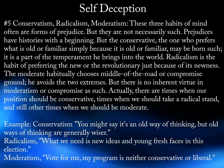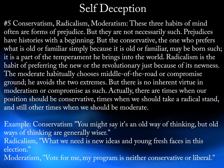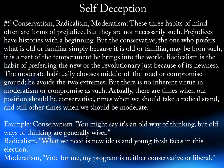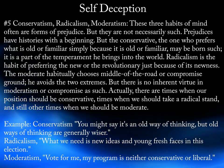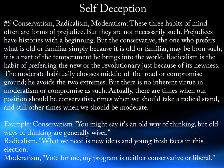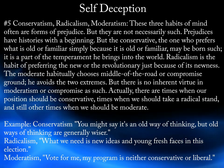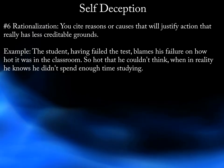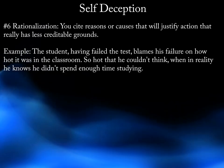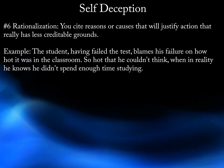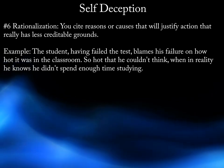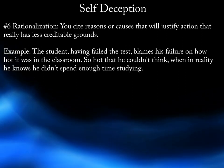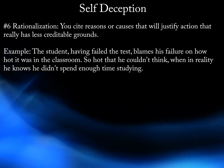Example, Conservatism: "You might say it's an old way of thinking, but old ways of thinking are generally wiser." Radicalism: "What we need is new ideas and young fresh faces in this election." Moderatism: "Vote for me. My program is neither conservative nor liberal." 6. Rationalization. You cite reasons or causes that will justify action that really has less credible grounds. Example: The student, having failed the test, blames his failure on how hot it was in the classroom — so hot that he couldn't think — when in reality he knows he didn't spend enough time studying.